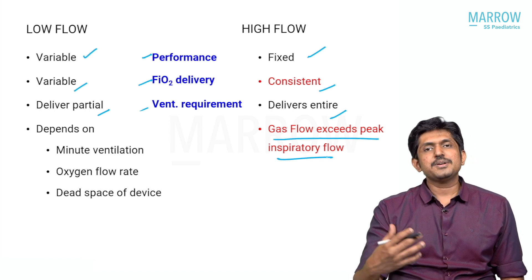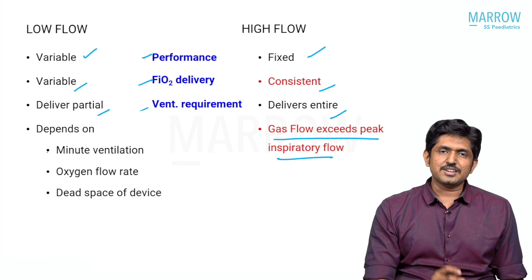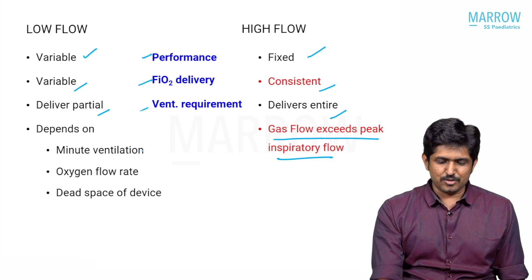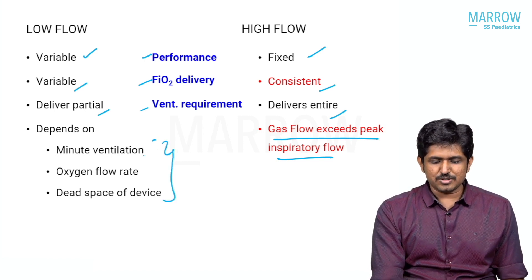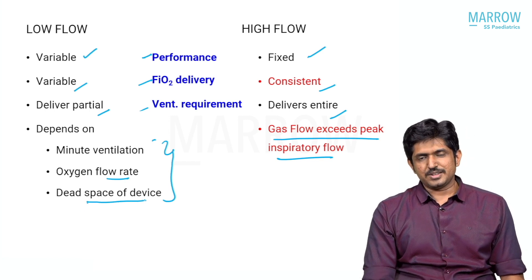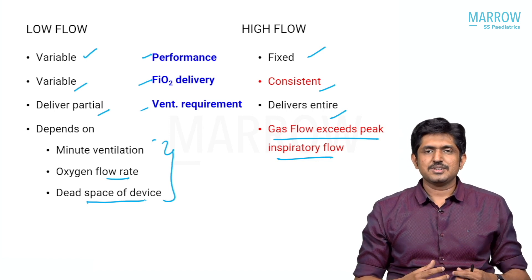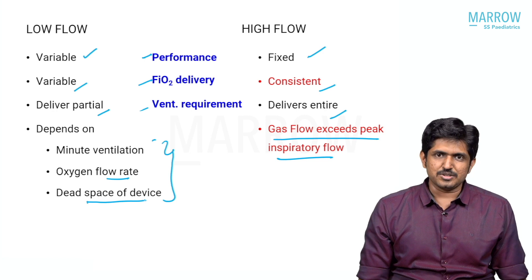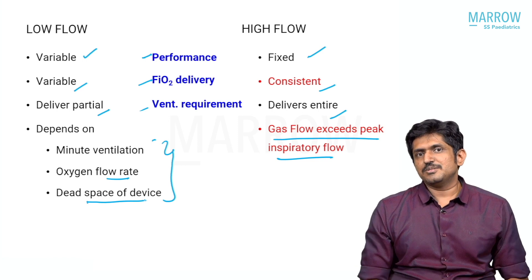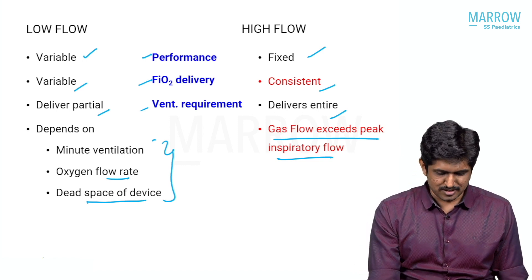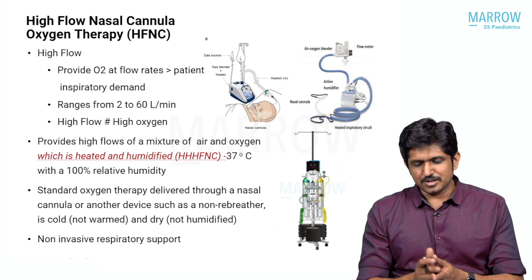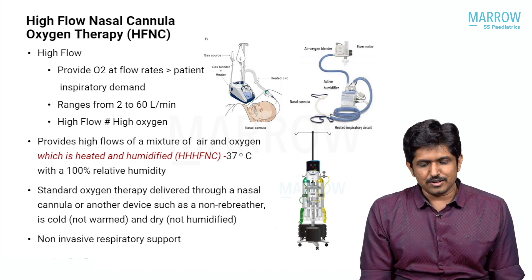Gas flow in high flow devices exceeds the peak inspiratory flow, whereas in low flow it does not. The difference depends on the patient's minute ventilation, the oxygen flow rate of the device, and the dead space of the device. Any device that delivers the complete inspiratory demand or more, with reduced dead space, matching the minute ventilation or twice the minute ventilation of the patient, is called a high flow device.